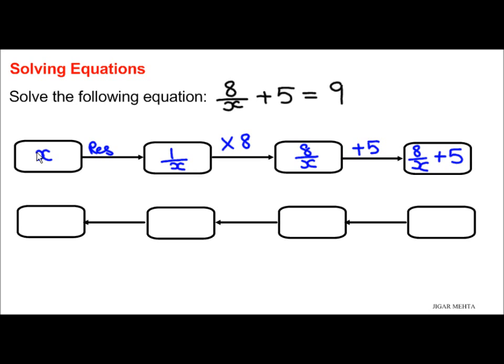Now going to solve the equation. So I need to go backwards starting with 9, because 8 over x plus 5 is equal to 9 as per the question.